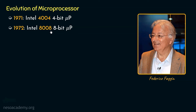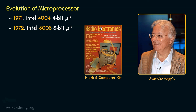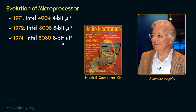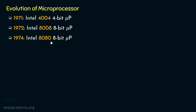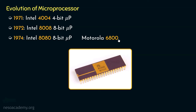In the case of Intel 8008, the word length was 8-bit, meaning it could handle 8 bits of data at once. Intel's 8008 was widely used in the famous Mark 8 computer kit. Realizing the potential of the 8008, Faggin and his team at Intel started improving it, and in 1974 Intel introduced the Intel 8080, also with an 8-bit word length. The Intel 8080 really created the microprocessor market. Other notable 8-bit microprocessors included the Motorola 6800 and the Rockwell PPS-8.